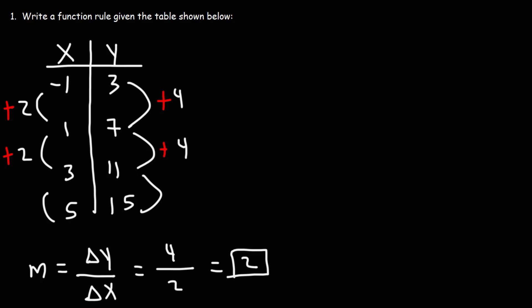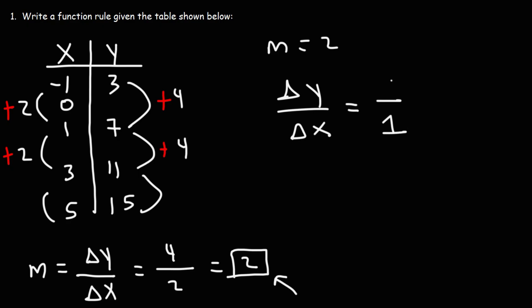Now what's our b value — our y-intercept? What is the value of y when x is zero? We know the slope is two, so when x changes by one, y changes by two, and when x changes by two, y changes by four. Going up one unit for x, we go up two units for y. So when x is zero, y has to be five — three plus two is five. Our b value is five.